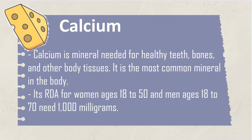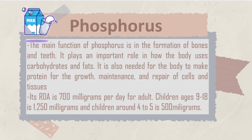Next we have phosphorus. The main function of phosphorus is in the formation of bones and teeth. It plays an important role in how the body uses carbohydrates and fats. It is also needed for the body to make protein for the growth, maintenance, and repair of cells and tissues. Its RDA is 700 mg per day for adults, 1,250 mg for children ages 9 to 18, and 500 mg for children around ages 4 to 5.